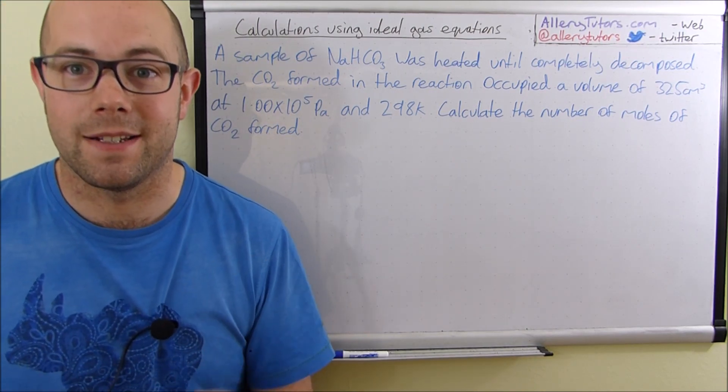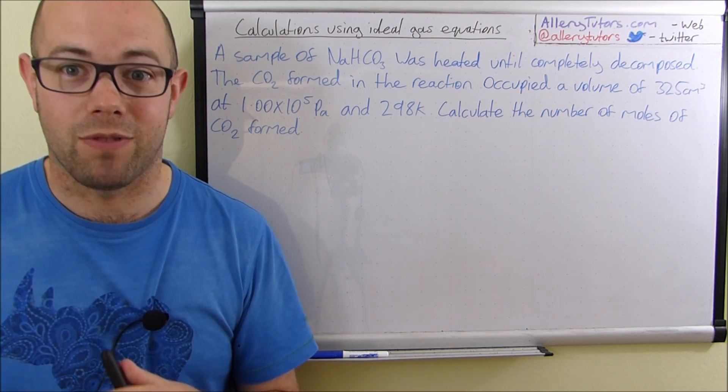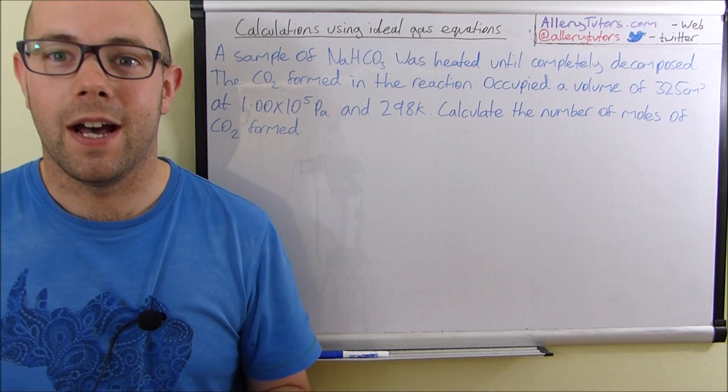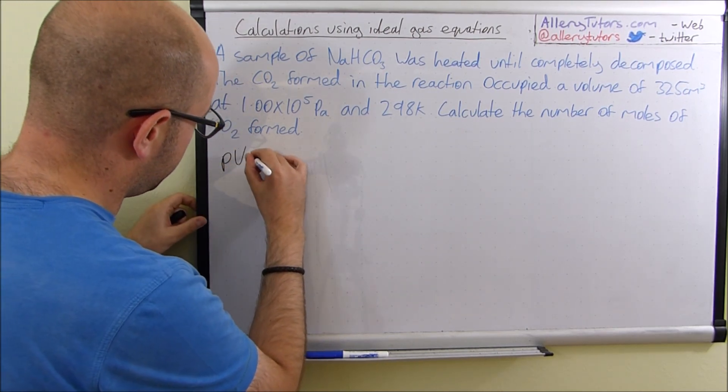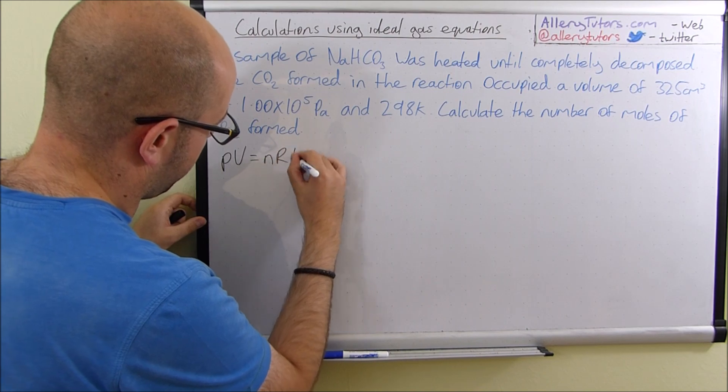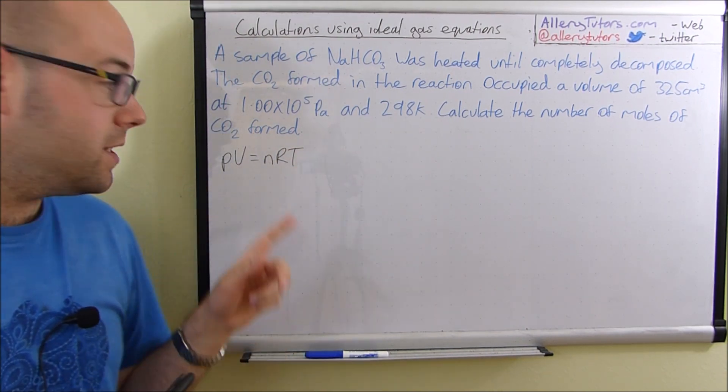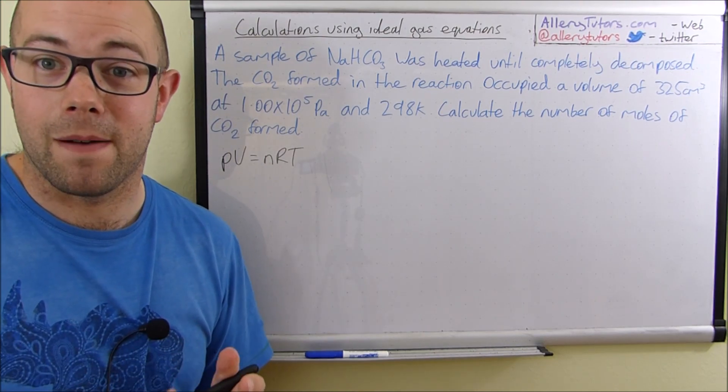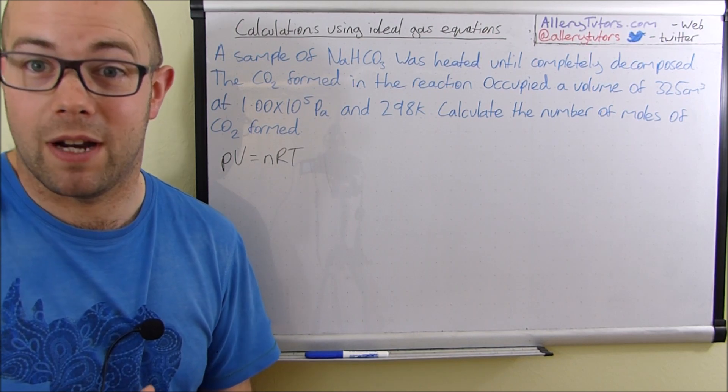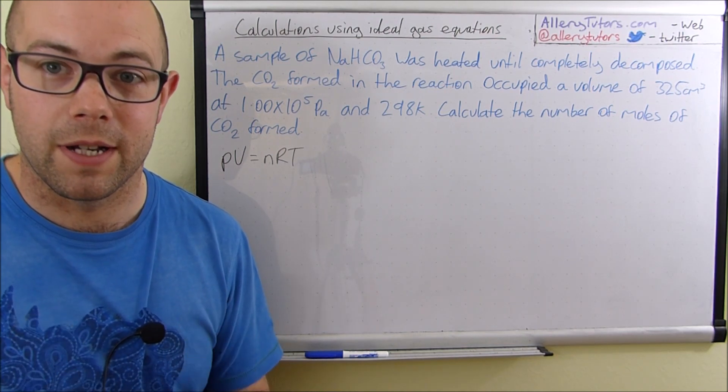This is a pretty standard ideal gas equation. So the first thing we have to do is write down the ideal gas equation. So that's going to be PV equals nRT. You need to know this equation. You actually get a mark sometimes for writing it down or writing in the substituted value. So make sure you do know it.